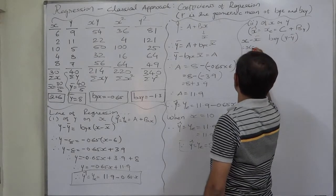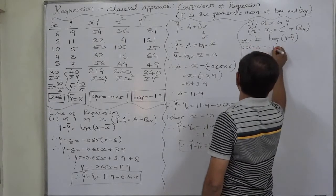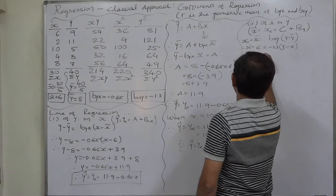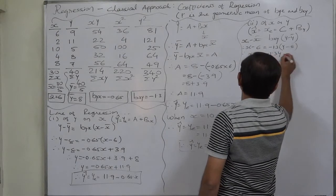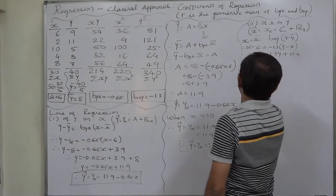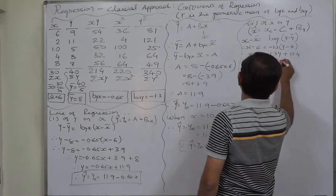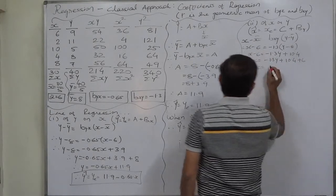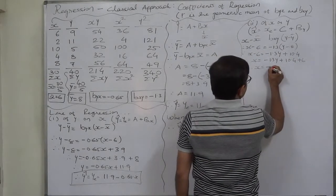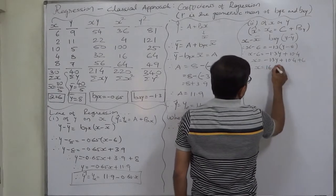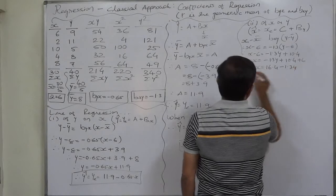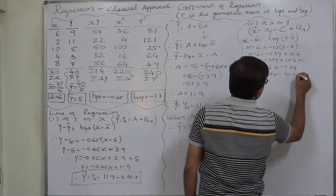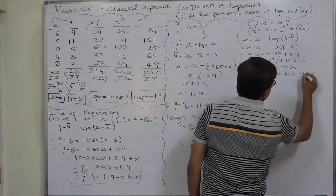Substituting: x minus 6 equals minus 1.3 times y minus 8, giving x minus 6 equals minus 1.3y plus 10.4. Therefore x equals 10.4 plus 6 minus 1.3y, and x-cap equals 16.4 minus 1.3y.